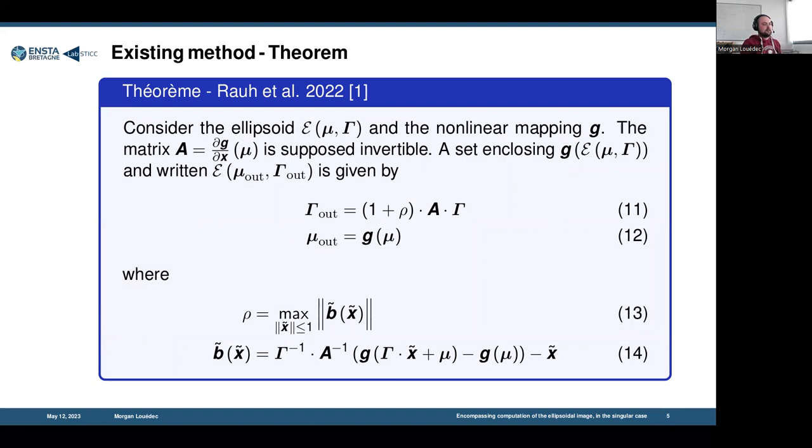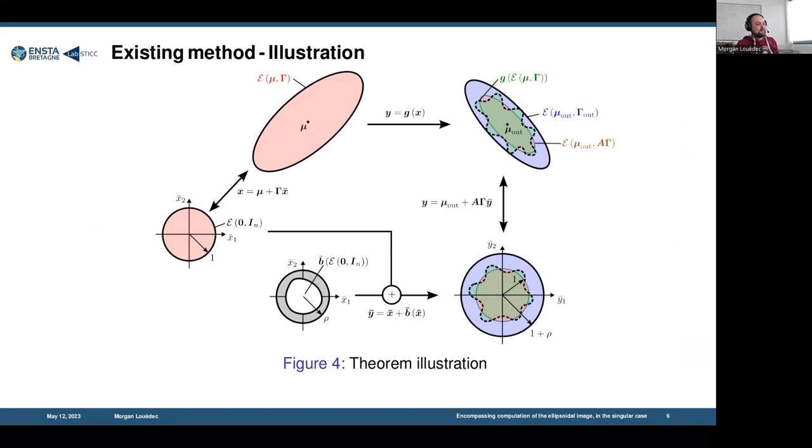The existing theorem I started from takes this linearized ellipsoid and inflates it with a certain gain which depends on interval analysis. The idea of that theorem was that the ellipsoids were to be normalized. With an affine transformation, the ellipsoid on the right were transformed back into spheres. The linearized ellipsoid was transformed into the unit sphere. Then by looking at the norm of the error between the linearized ellipsoid and the true image in green, it's possible to find an addition we have to add to the norm.